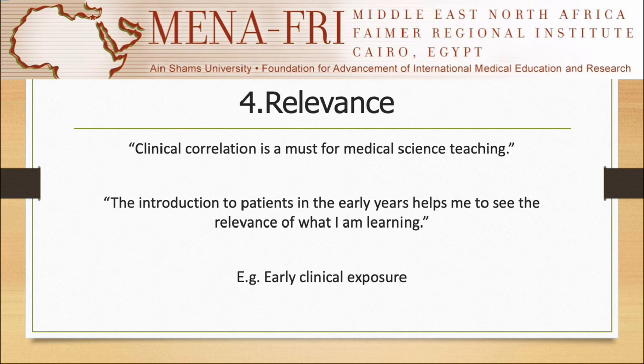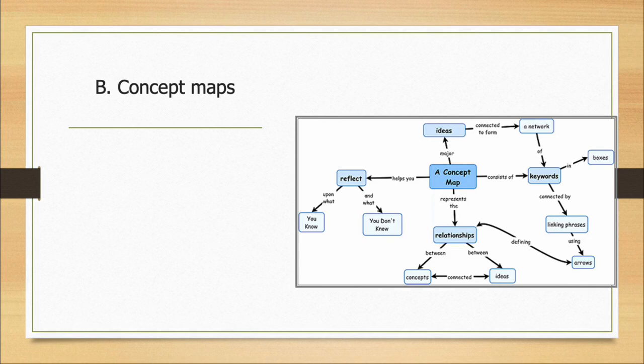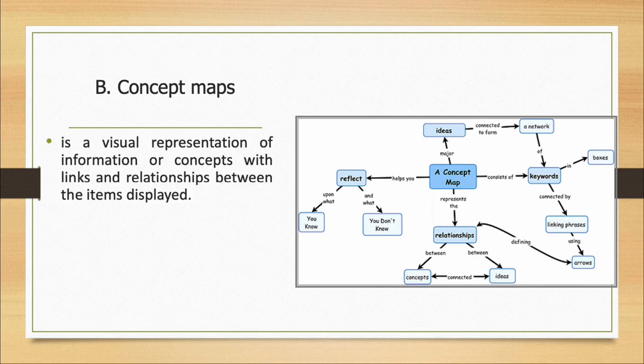The last FAIR principle is relevance of teaching. Clinical correlation is a must for medical science teaching. Students acknowledge that introduction to patients in the early years helps them see the relevance of what they are learning. The concept of early clinical exposure is now very popular, helping students understand the relevance of what they are taught in the first years of medical school, which are usually dedicated to basic science. The second method to make learning effective is the use of concept maps. A concept map is a visual representation of information or concepts with links and relationships between items displayed, showing the network of related concepts as the learner links new concepts to what is already known.